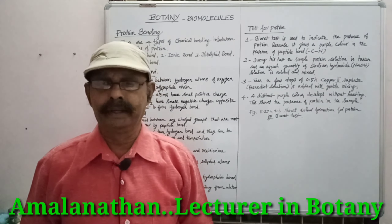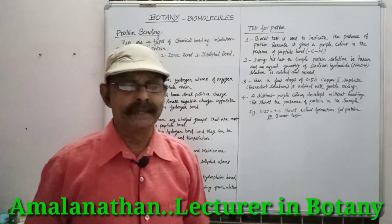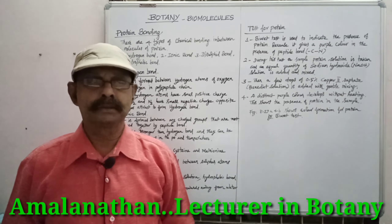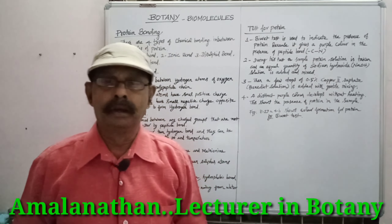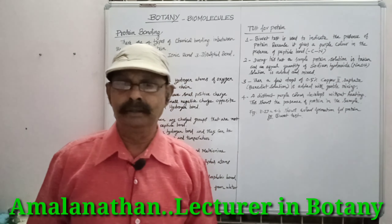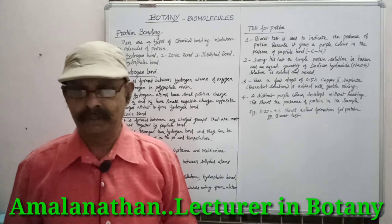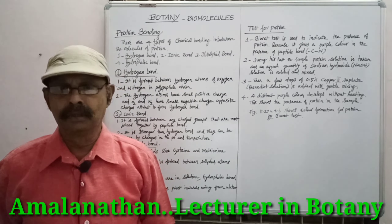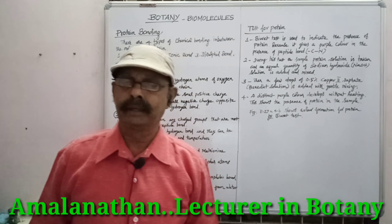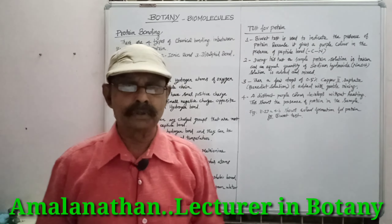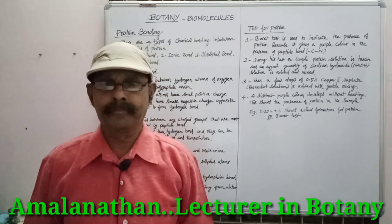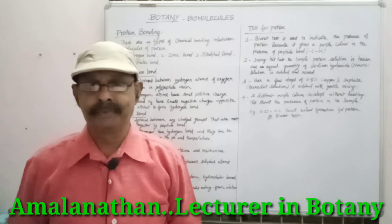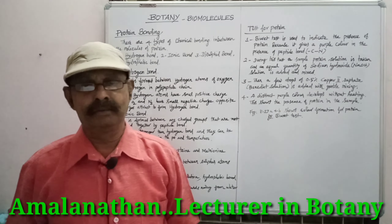The third one is the disulfide bond. Some amino acids, like cysteine and methionine, contain sulfur — they are sulfur-containing amino acids. The disulfide bond is formed between the sulfur atoms of these amino acids.